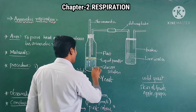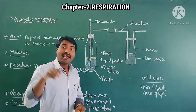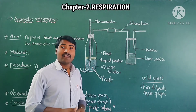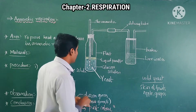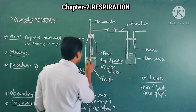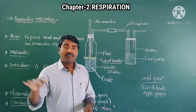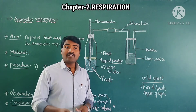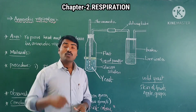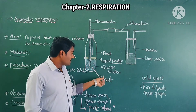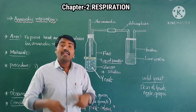After adding the yeast to the glucose solution, pour a one-inch layer of liquid paraffin over the solution. This liquid paraffin acts as a wax layer. We use liquid paraffin to prevent the entry of other gases — especially oxygen — into the glucose and yeast solution.